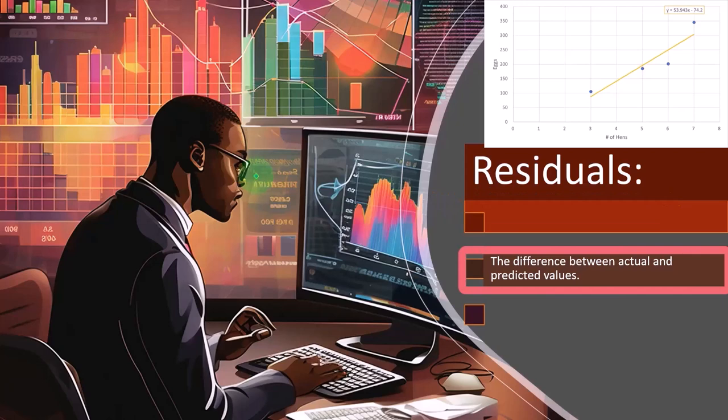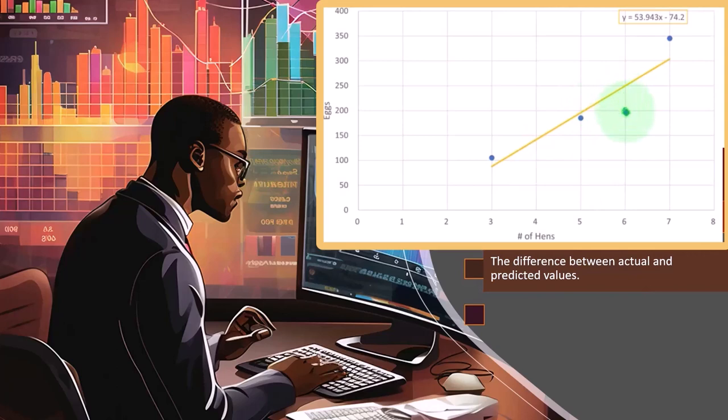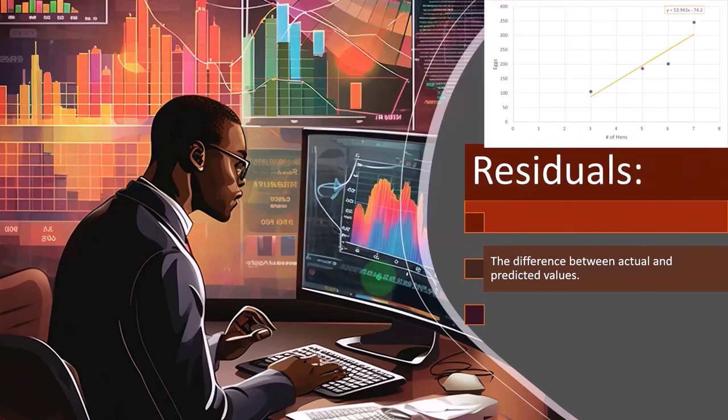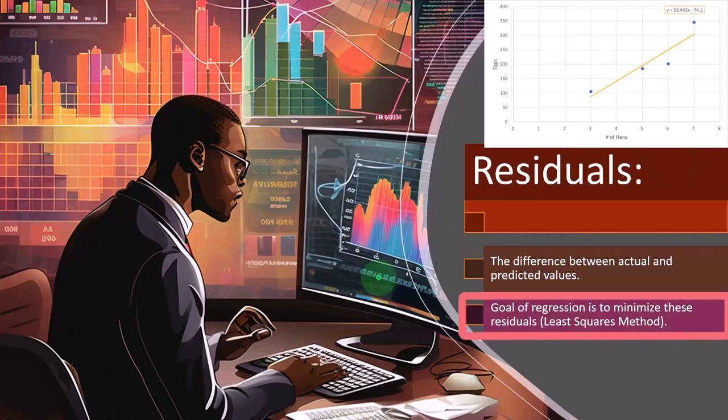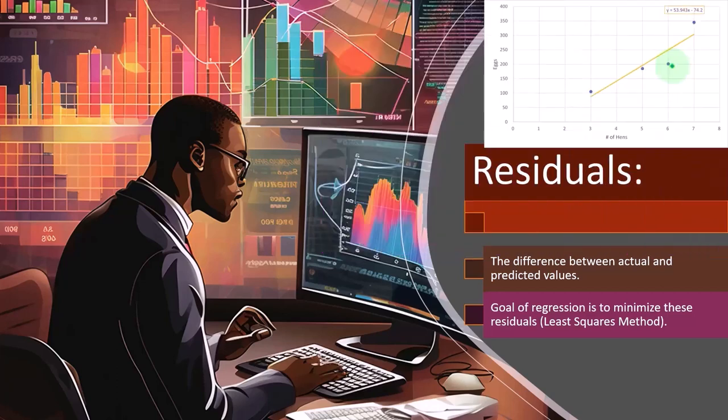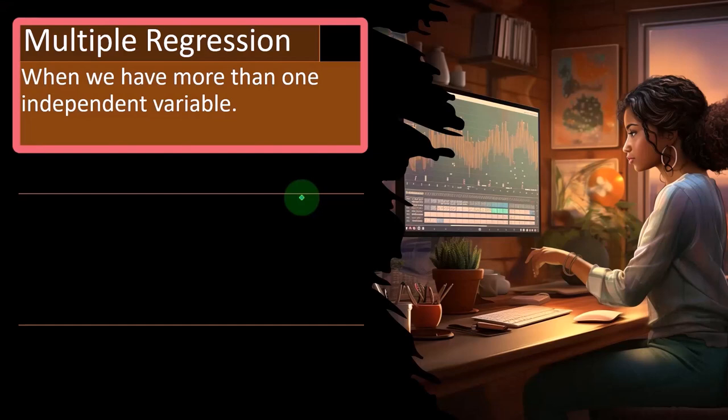So residuals: the difference between actual and predicted values. So the line representing our predictive values, here's the actual values on the data points, and the residuals are the differences. Now our goal here, of a regression, is to minimize these residuals. So that's the least squares method. In other words, this line that we're putting between these data points is minimizing the differences between the predictive values and the actual values.